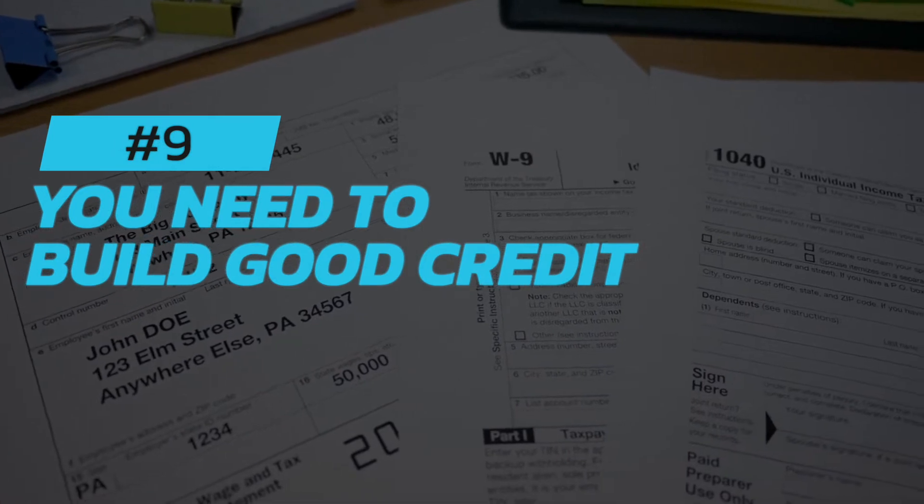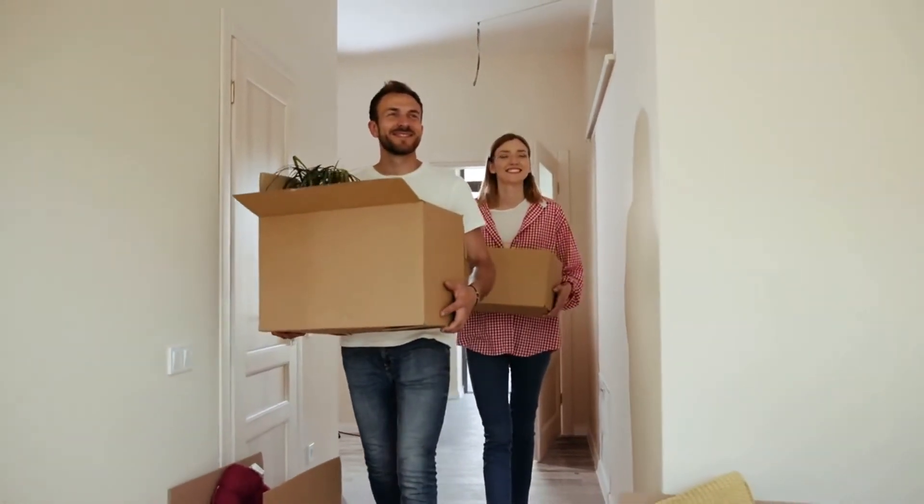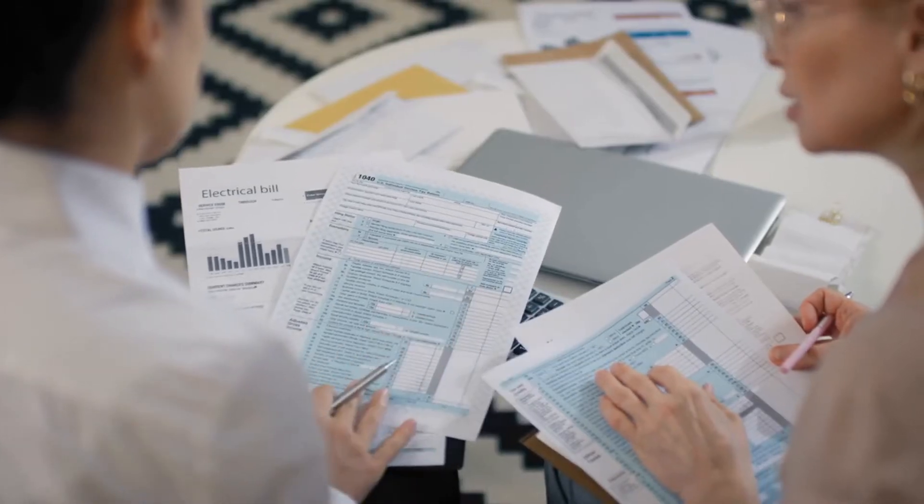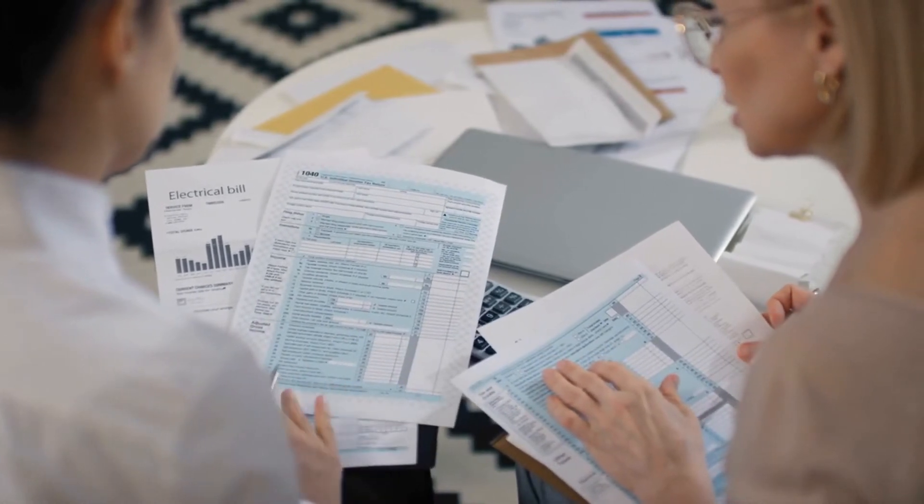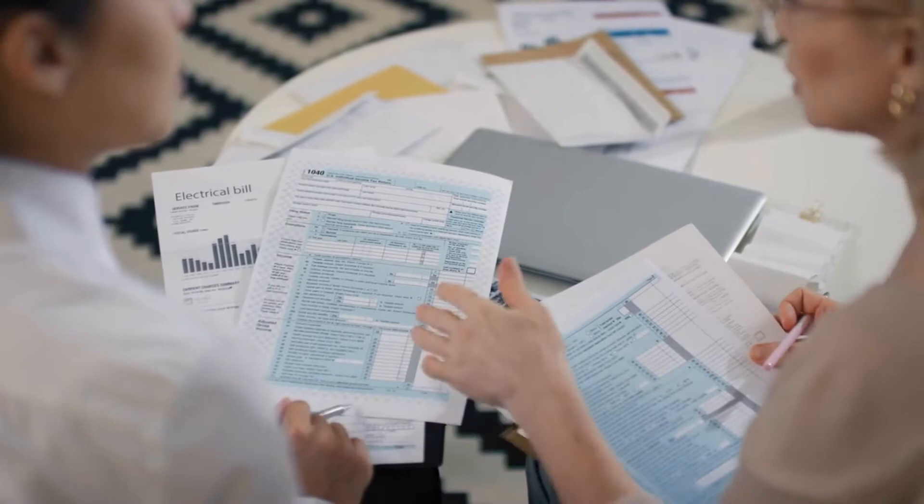Number nine: You need to build good credit. Good credit is important for getting loans, renting an apartment, and more. If you have bad credit, it can be difficult to get approved for anything. That's why it's important to build good credit. You can do this by making all your payments on time, keeping your credit utilization low, and only applying for credit when you need it.